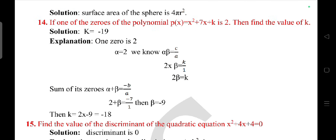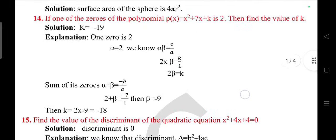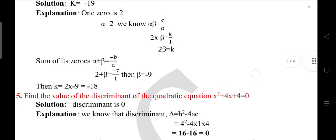Write the formula to find the surface area of the sphere: 4 pi r square. If one of the zeros of a polynomial x square plus 7x plus k is 2, then find the value of k. One of the zero is 2, then alpha is 2, alpha into beta is k by 1, 2 beta equals k.